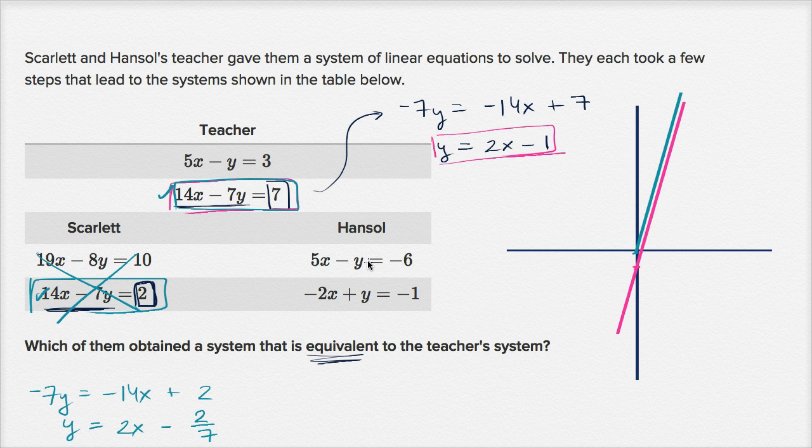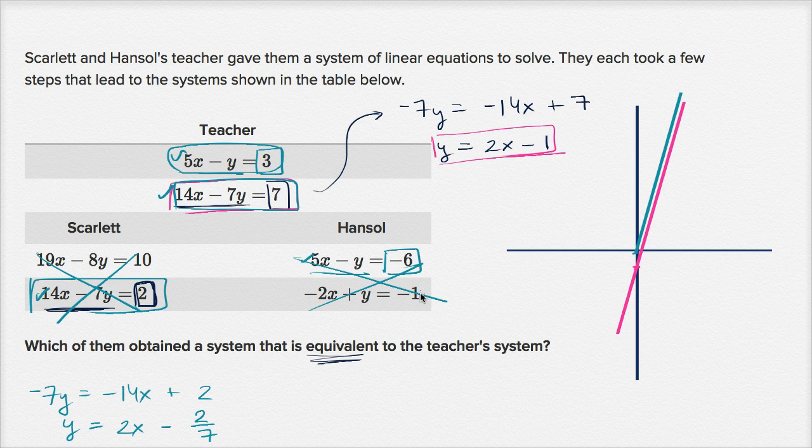Well we see Hansel has the same thing going on here. 5x minus y, 5x minus y, but then the constant term is different. Negative 6, positive 3. So this and this also represent parallel lines. Any xy pair that satisfies this, there's no way that it's going to satisfy this. These two lines don't intersect. They are parallel. So Hansel's system is not equivalent either.